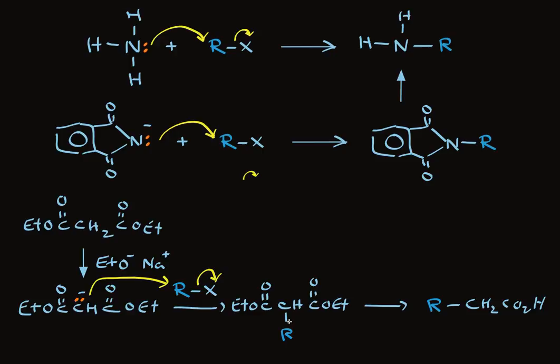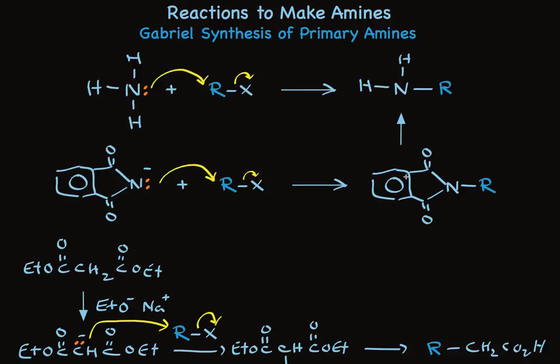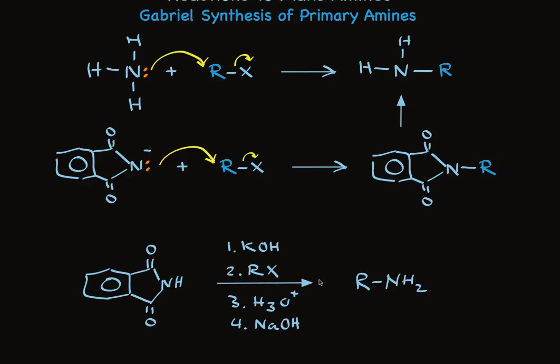In the Gabriel synthesis, the alkyl group is on nitrogen, and here it's on carbon. And in the final step, we get rid of the part of this molecule to have an alkyl group attached to a CH2. And that's exactly what the Gabriel synthesis does. In the final step, this intermediate is transformed to the primary amine.